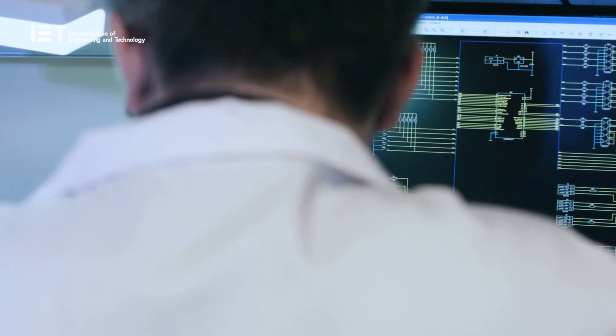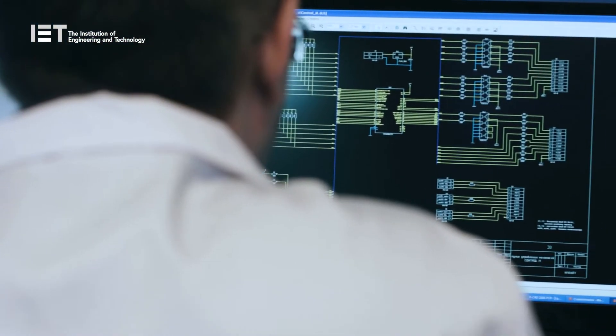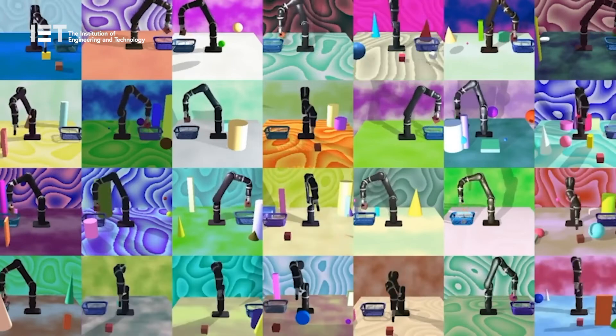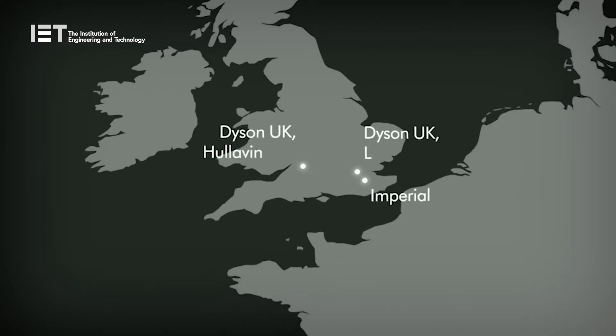To help realize its goal, Dyson is looking to hire 700 robotics engineers over the next five years, who will be located across the brand's London, Hullivington Airfield and Singapore locations.